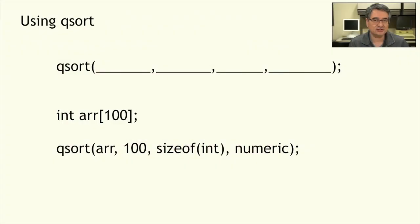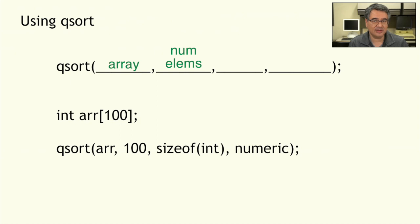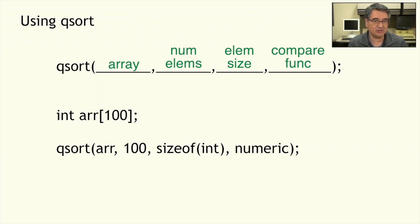The qsort function takes four parameters. The first one is the array you want to sort. The second one is the number of elements in the array, and the third parameter is the size of each element. The fourth parameter is a comparison function, and I'll explain that in just a moment.